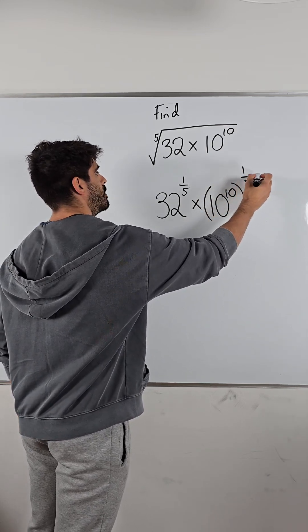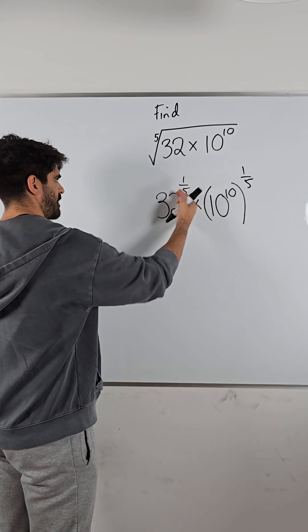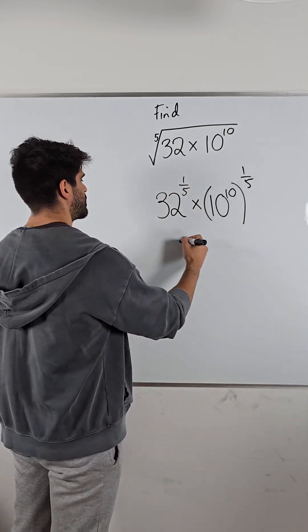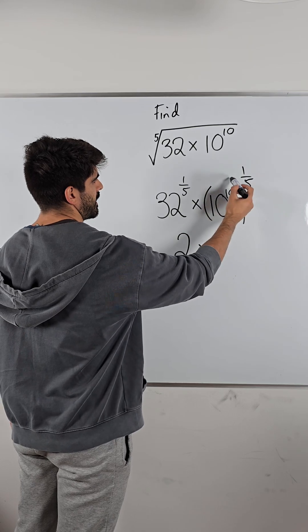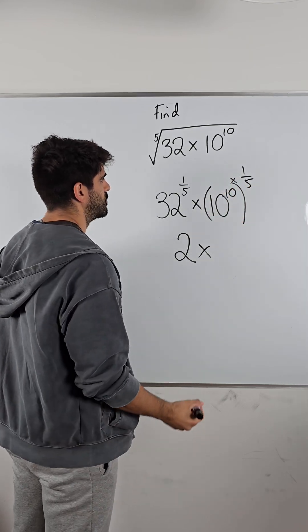What's the fifth root of 32? What multiplies by itself five times to give you 32 is two. And here, when you have a number raised to the power raised to another power in a bracket, you multiply the powers.